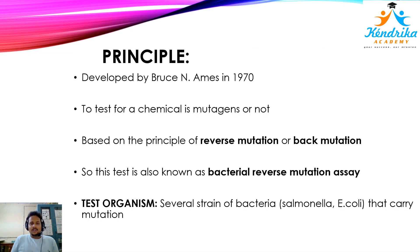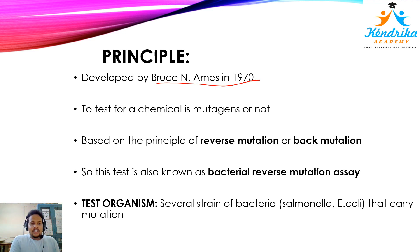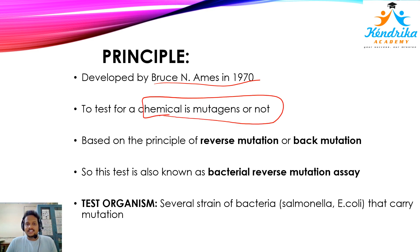This test was first developed by Bruce Ames in 1970, and based on his name, this test was given the name Ames test. This test determines whether a particular chemical is a mutagen or not.